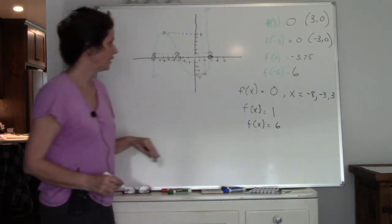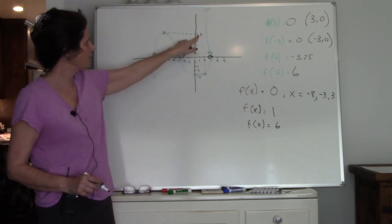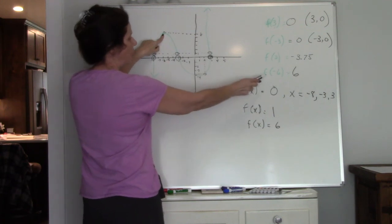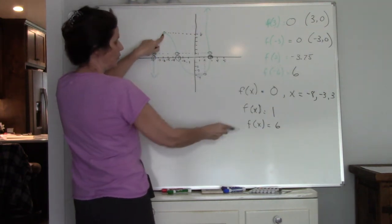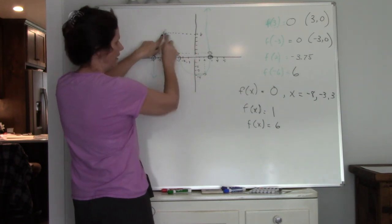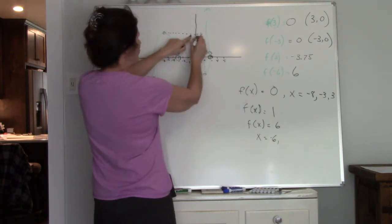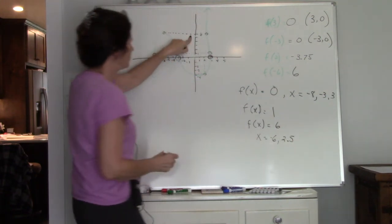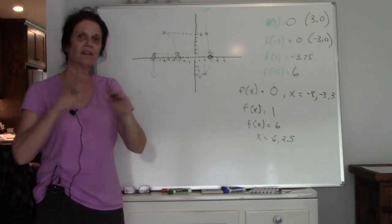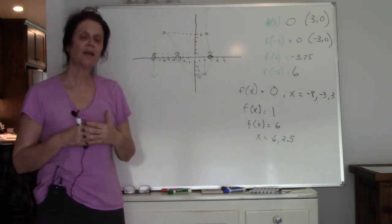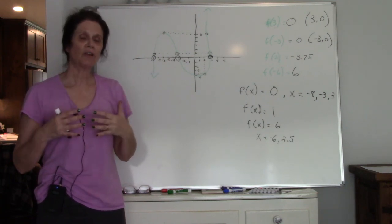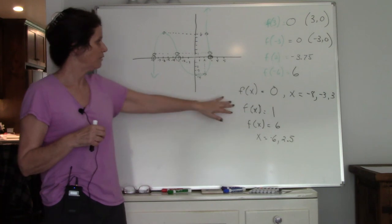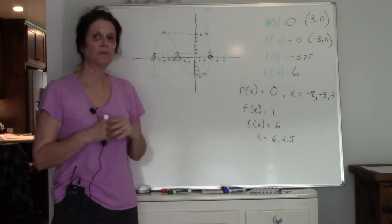What if f of x equals 6 — when y is 6, what's x? We already answered part of this: when x was negative 6, y was 6. So when y is 6, one x value is negative 6. But there's also another intersection around x equals 2.5. So make sure you look at the entire graph to identify all x values. When given the x value, find y; when given the y value, find all the x's — because sometimes there's more than one.